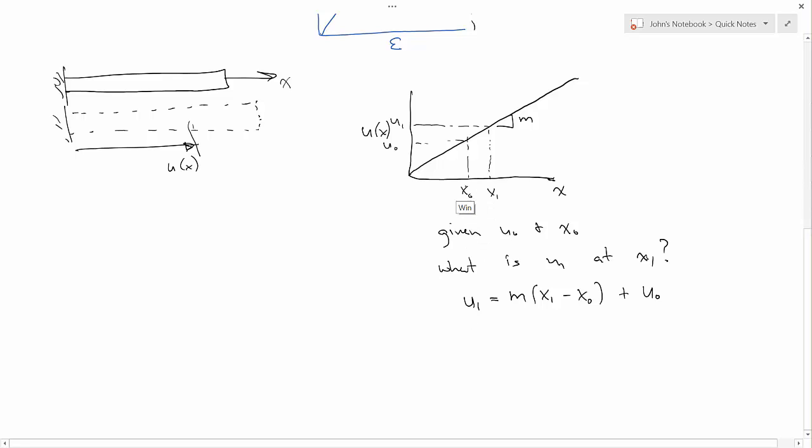So if x1 and x0 are an infinitely small distance apart, dx, so they're very, very close to one another, infinitely close to one another, then I have times dx plus U0, and I might also write U1 minus U0 is equal to m dx. Now, what's the mathematical definition of the slope of a line? What do we say in a calculus term? The derivative. The derivative of a curve.